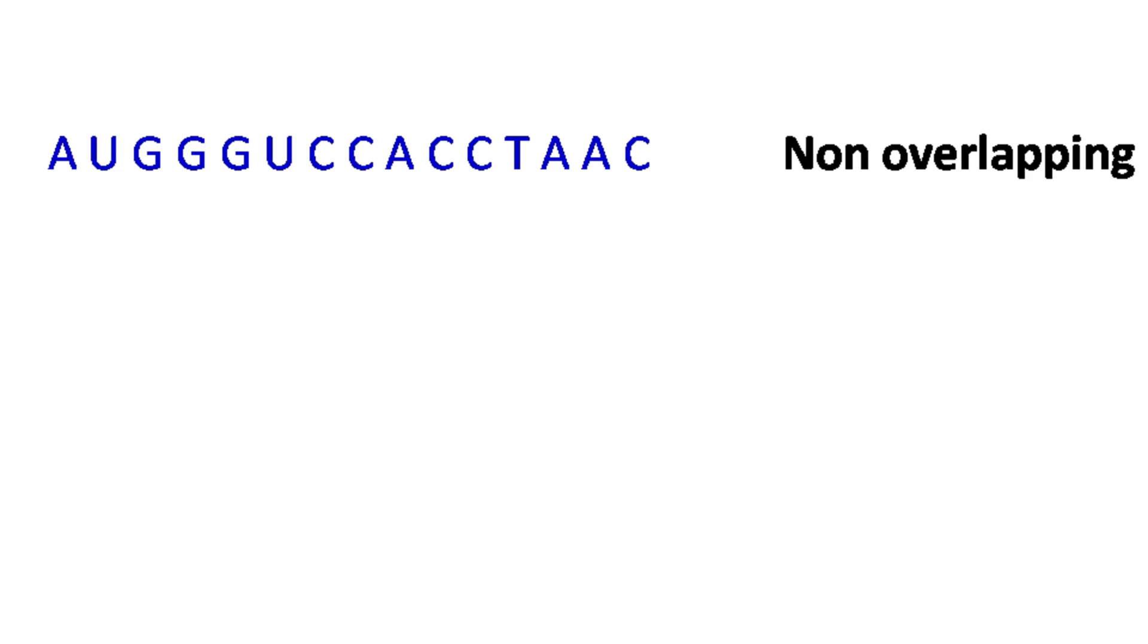The genetic code is non-overlapping, which means after reading one triplet, the reading frame shifts over the other three nucleotides.